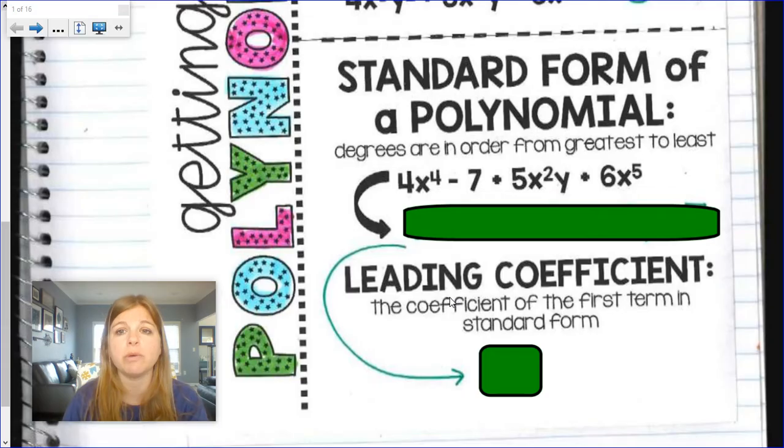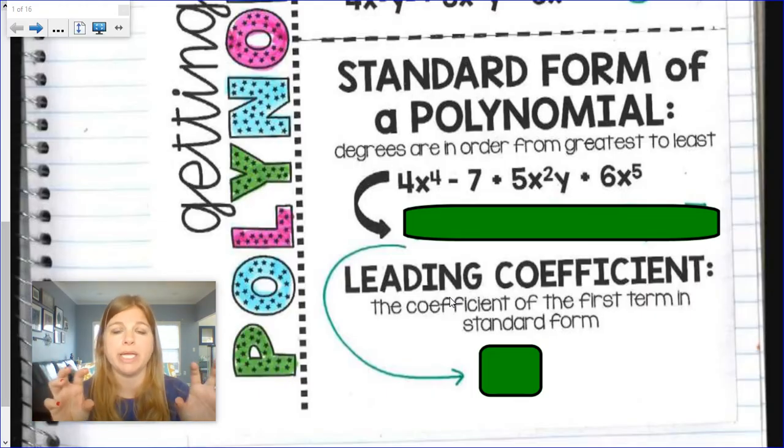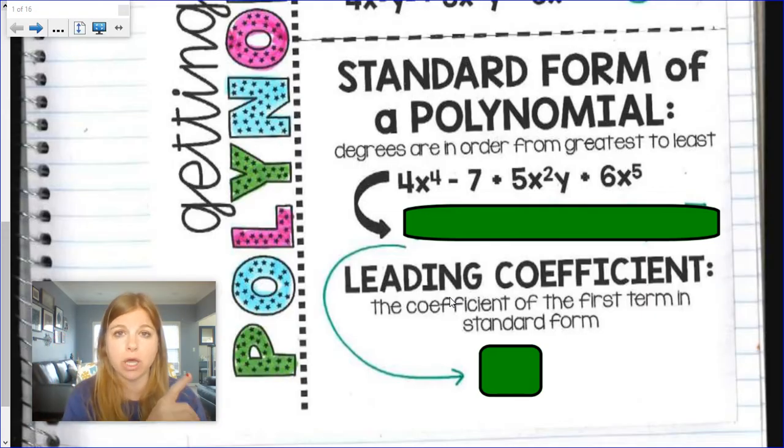Standard form of a polynomial isn't the standard form that you learn in linear equations. Standard form for a linear equation is ax plus by equals c. Standard form for a polynomial means that we have the polynomial all arranged in order so that it goes from the highest degree to the lowest degree.